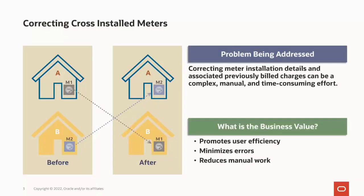Cross-installed meters typically occurs in apartment buildings where meters are located in close proximity to each other. What happens is that the physical meter installation details are not correctly reflected in the billing system. This diagram illustrates cross-installed meters from a billing system's perspective. Meter M1 is linked to Unit A, but is physically installed on-site for Unit B. And Meter M2 is linked to Unit B, but is physically installed on-site for Unit A. As a result, Unit A is being incorrectly billed for usage occurring at Unit B, and Unit B is being incorrectly billed for usage occurring at Unit A.